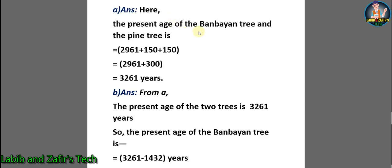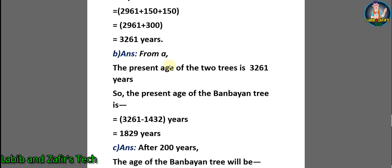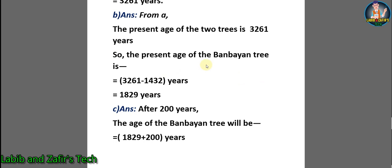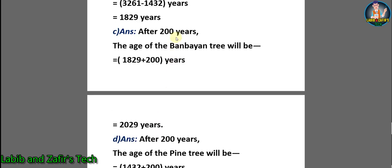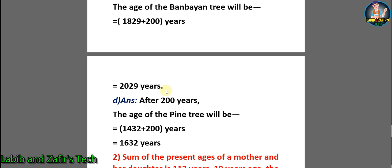The questions are: A) What are the present ages of the two trees? B) What is the present age of the banyan tree? C) What will be the age of the banyan tree after 200 years? D) What will be the age of the pine tree after 200 years? Answer A: The present sum is 2,961 plus 150 plus 150 equals 3,261 years. Answer B: Present age of the banyan tree is 3,261 minus 1,432 equals 1,829 years. Answer C: After 200 years, the banyan tree will be 1,829 plus 200 equals 2,029 years.